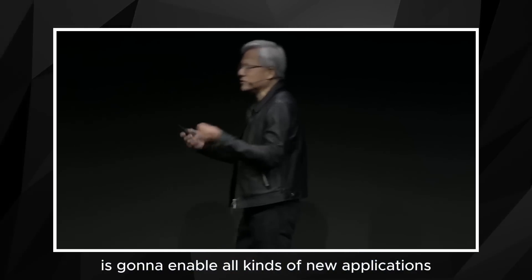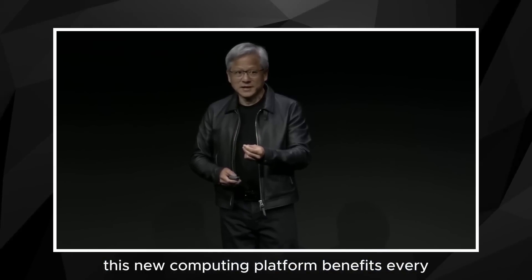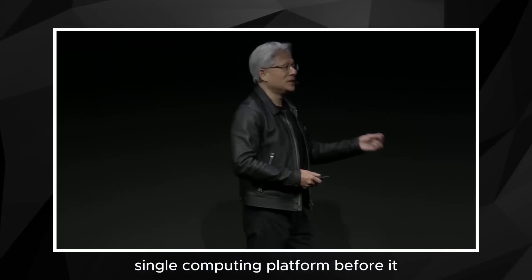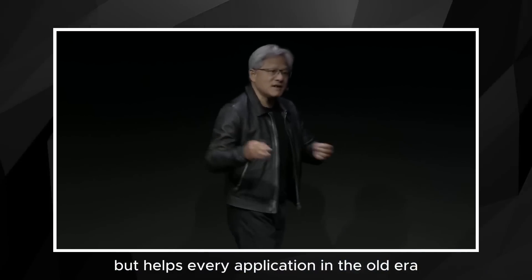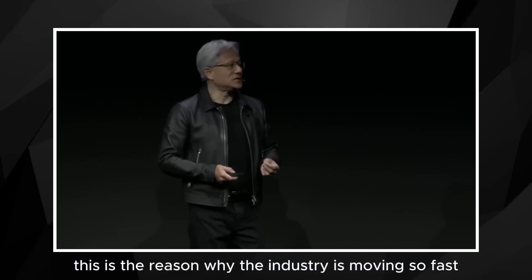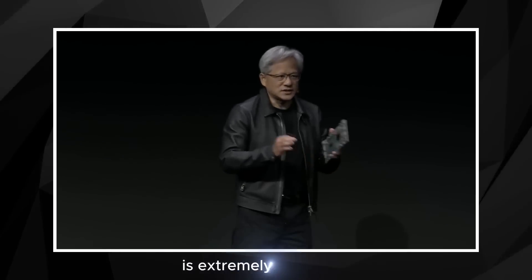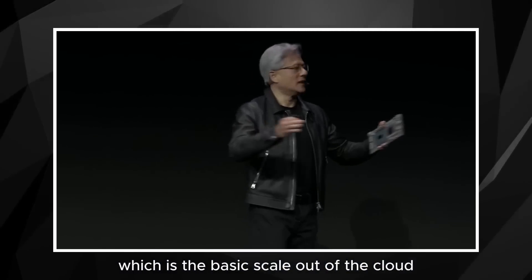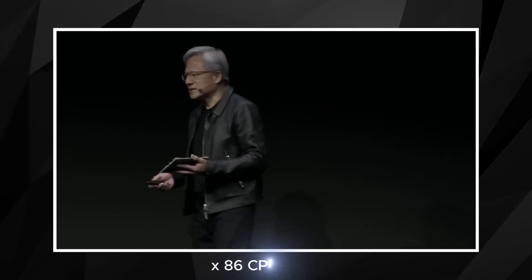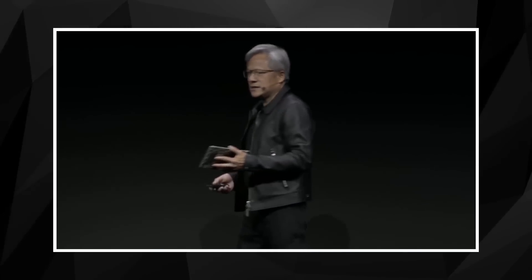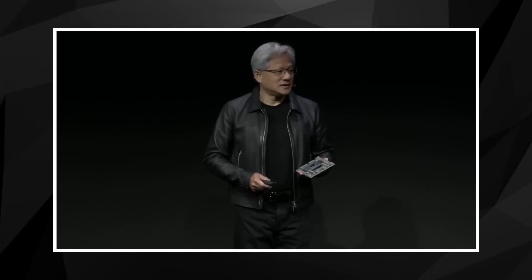This new computing platform is going to enable all kinds of new applications, but very differently than the past. This new computing platform benefits every single computing platform before it. For the very first time, this new computing platform not only enables new applications in this new era, but helps every application in the old era. This is the reason why the industry is moving so fast. But one particular area is extremely important, which is the basic scale-out of the cloud. The basic scale-out of the cloud, historically, was based on off-the-shelf CPUs, x86 CPUs. While general purpose computing is a horrible way of doing generative AI.